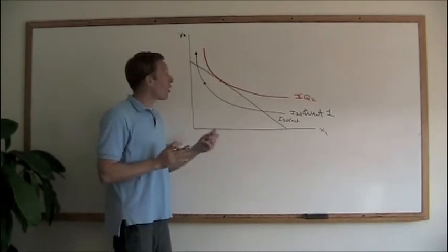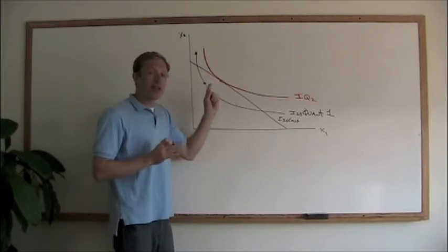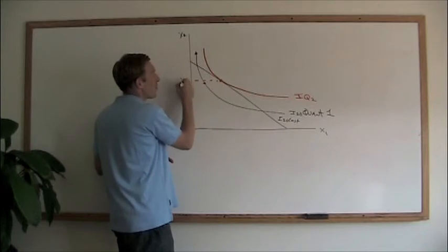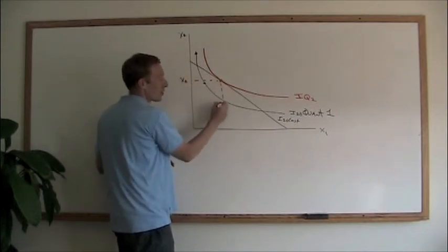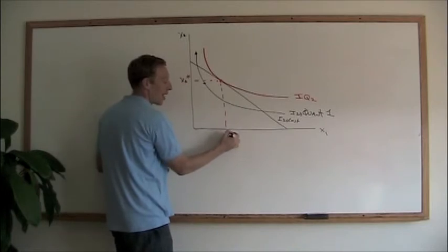Put another way, as we've seen before, we want to find where the isoquant and the slope of the isoquant and the slope of the isocost are exactly the same. That tells us that we can produce this amount of X2, call that X2 star, and this amount of X1, we'll call that X1 star.